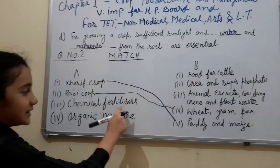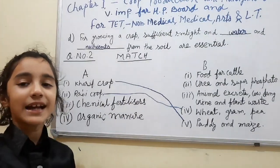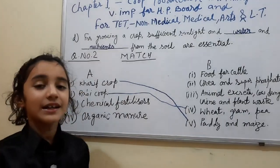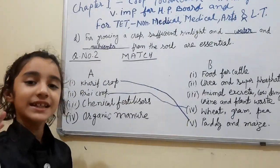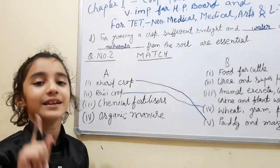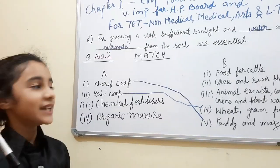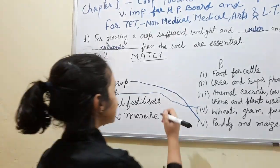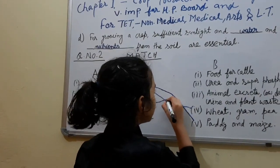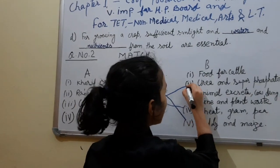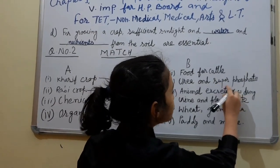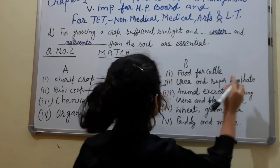Chemical fertilizers. What will match with the chemical fertilizers? I'll give you 3 seconds. Your time starts now. 1, 2, 3. Your time is up. The correct answer to it is: urea and superphosphate.